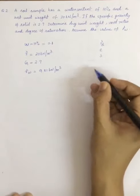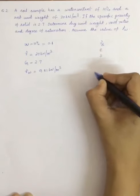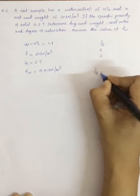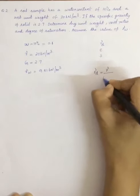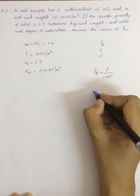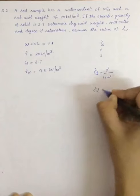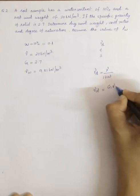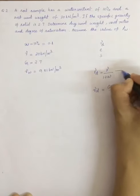As we know, gamma d, dry unit weight, is equal to gamma divided by 1 plus w. That is a fundamental relationship. And gamma d can also be written as g gamma w divided by 1 plus e.